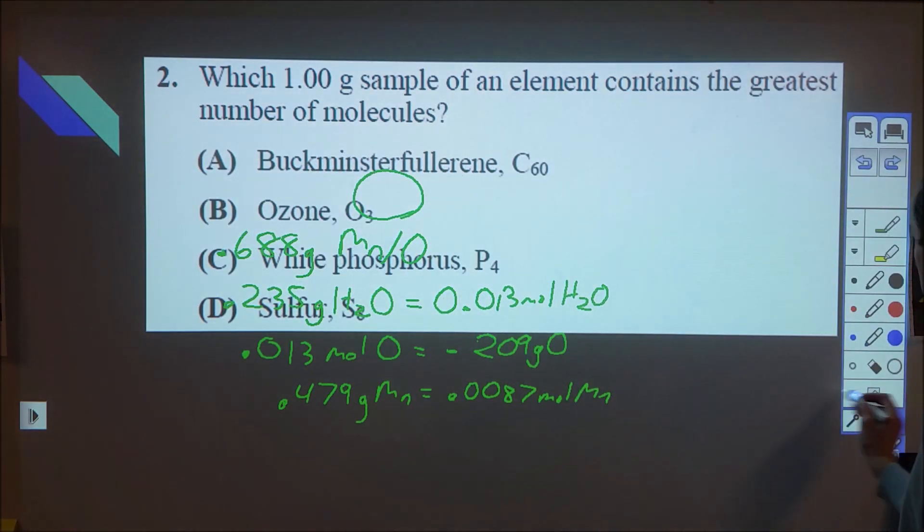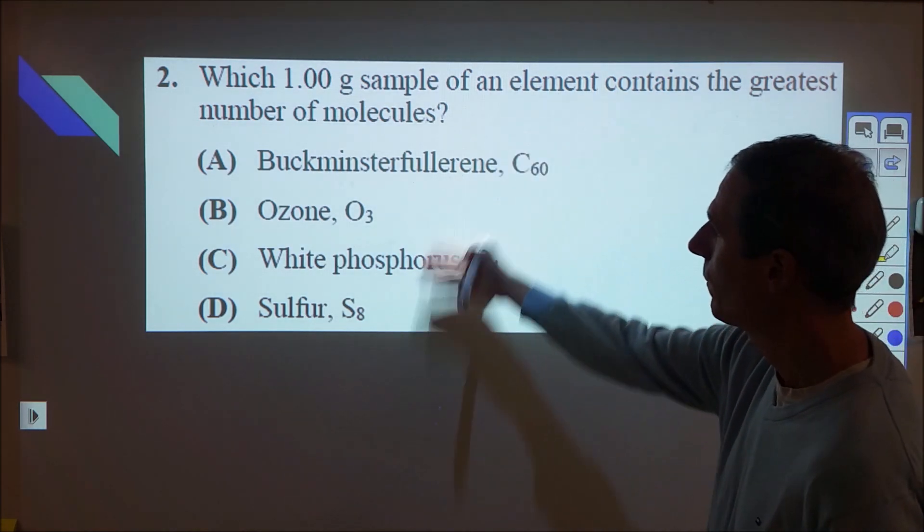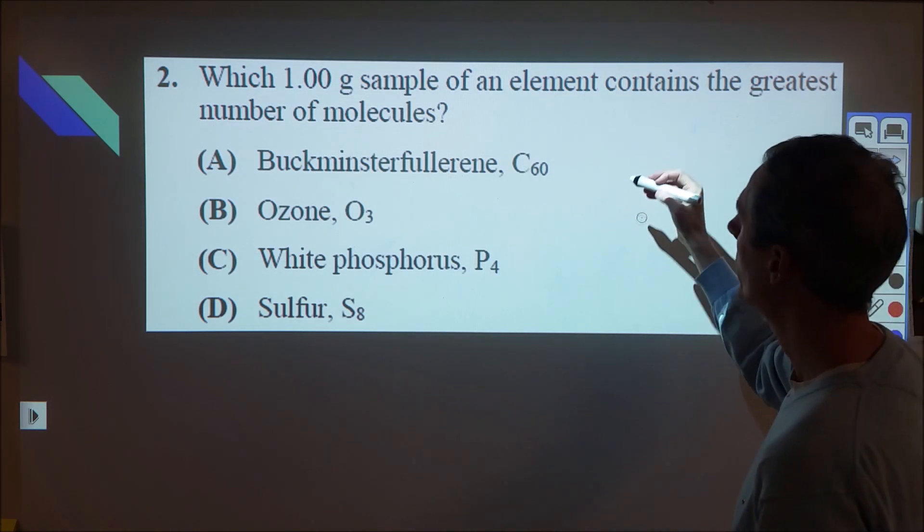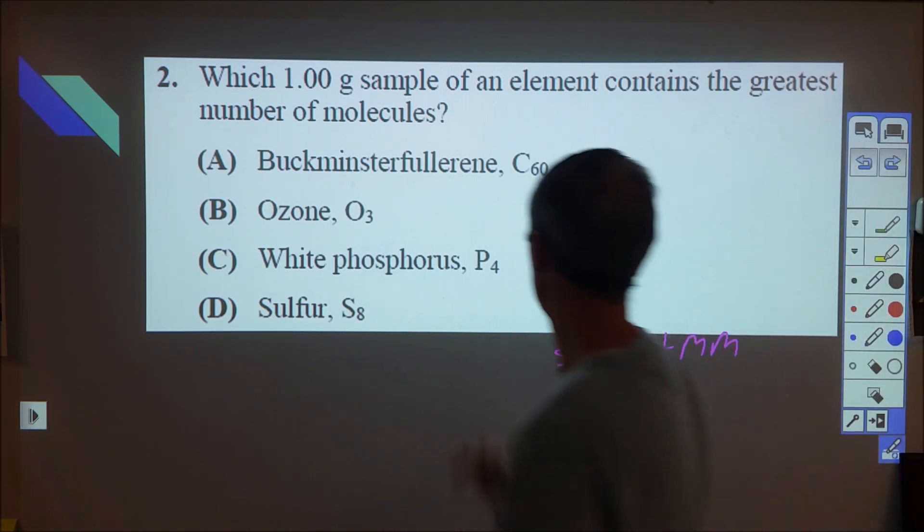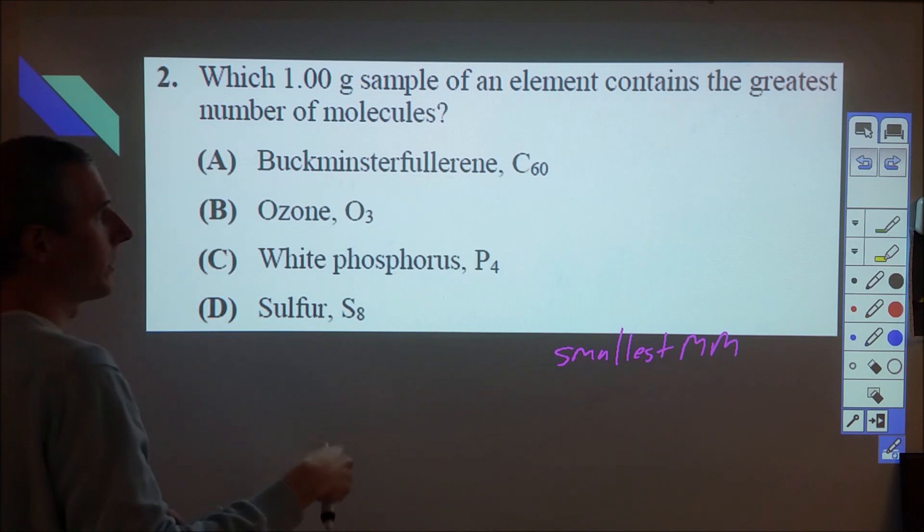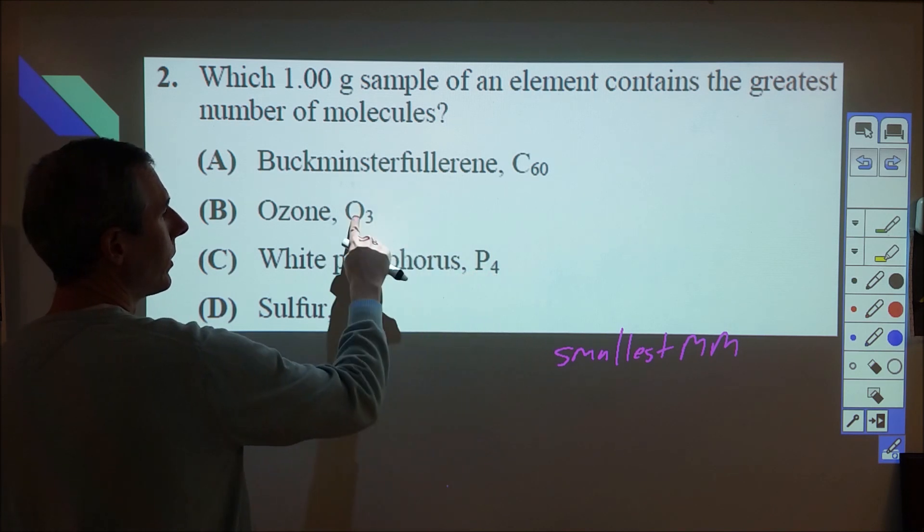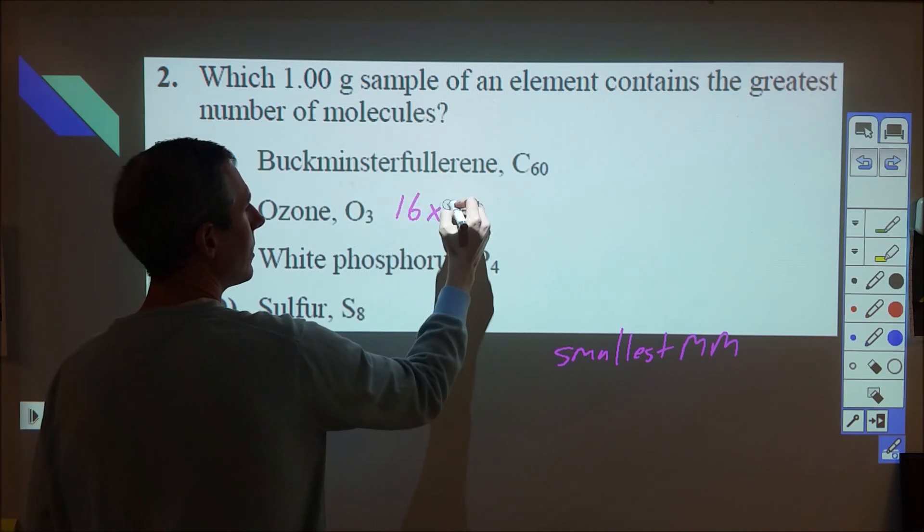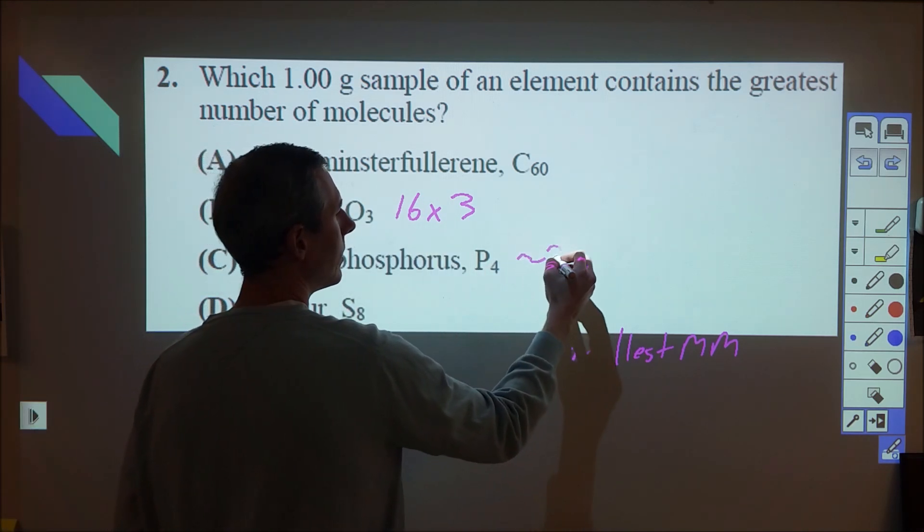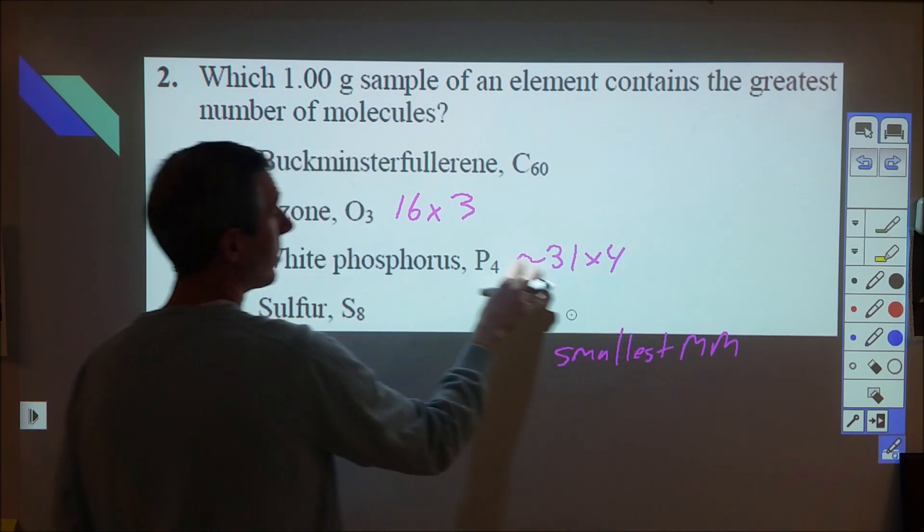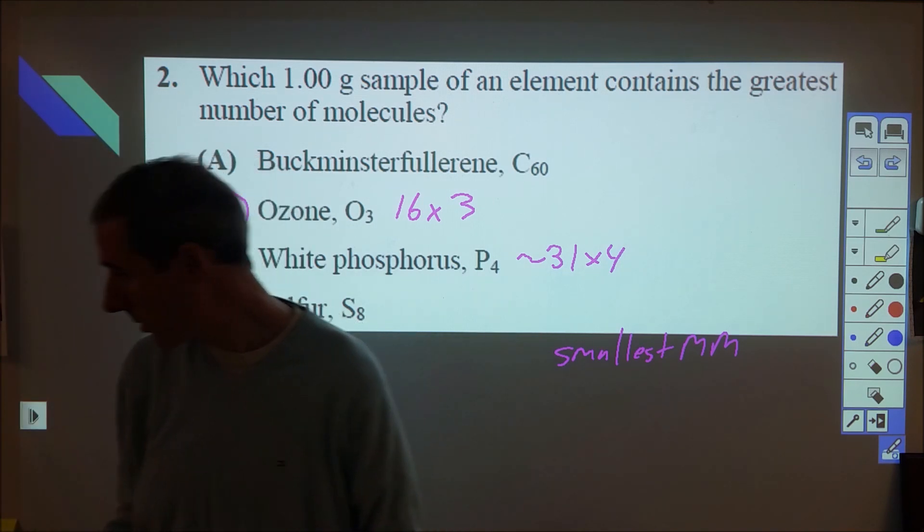Second question, we don't need to do any calculations, so whenever possible you want to work quickly on these tests. Here it just says you have one gram of any of these four things, which one has the largest number of molecules. So all you want for that is which one has the smallest mass or which particle is the smallest. So if we look, Buckminsterfullerene is 60 carbon atoms, that's going to be tremendously large. Sulfur with eight sulfurs is going to be quite large, so we're really choosing between these two. Oxygen is 16 and we have three oxygens per molecule for 48 AMUs per atom, whereas phosphorus is around 31, it's 30.97. But anyway, long story short, 48 compared to 124, so ozone is our choice there. And that one we can scoot through quite quickly.